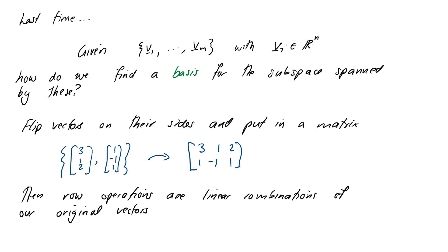So the idea is that if we eventually get to our reduced row echelon form, we've got there by only ever taking linear combinations of the rows of that matrix, which is our original set of vectors. Before we get to this in earnest, we'll introduce a helpful concept for flipping things on their sides - writing vectors as rows - and that is the matrix transpose.